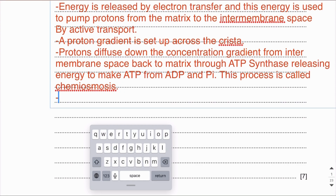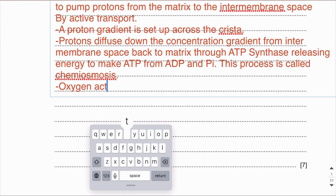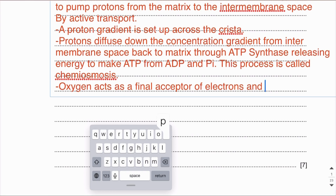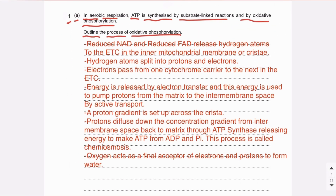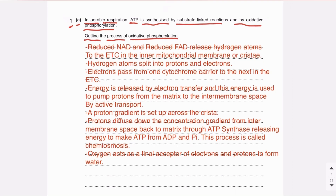Oxygen acts as the final acceptor of electrons and protons to form water. That's the outline of oxidative phosphorylation — these are the seven points to write for full marks. If you haven't covered oxidative phosphorylation in detail yet, you can watch my other video lecture; the link will be in the description below.